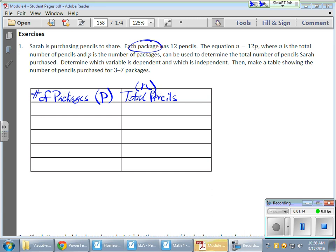My formula or my equation is n equals 12p, which means 12 times p. So no matter how many packages I have, since there are 12 pencils per package, I'm going to multiply that number of packages by 12. Again, 12 pencils per package. Now, they're telling me she's purchasing or she's going to show between three and seven packages. So that is going to be my independent area here.